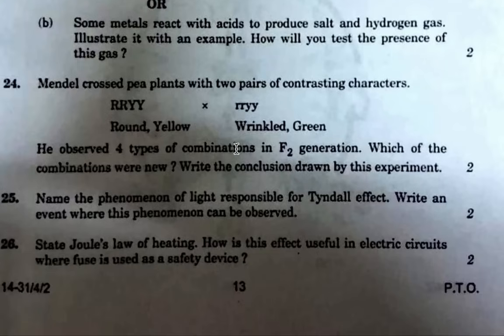Next, Mendel crossed pea plants with two pairs of contrasting characters and observed four different types of combinations. The new combinations were: round green — a new combination — and wrinkled yellow — also a new combination. Wrinkled green was already known. Write the conclusion drawn from the experiment: this shows the independent inheritance of traits.